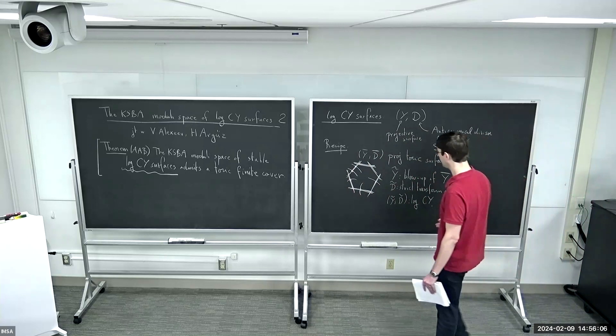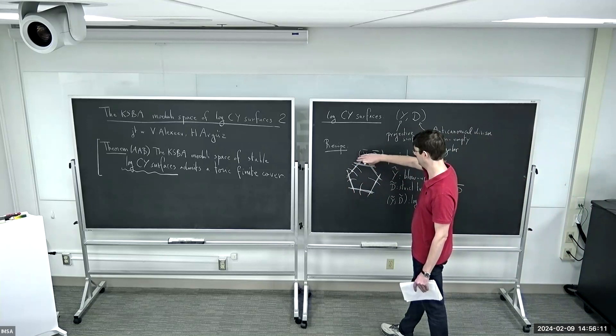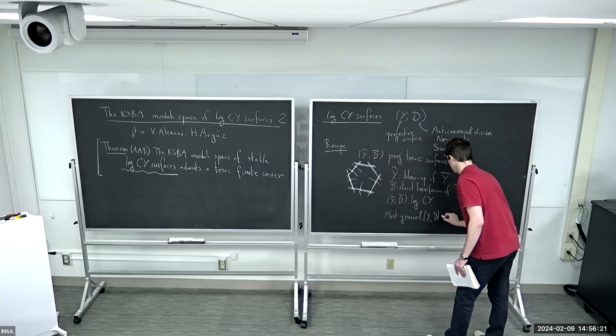To get all of them: if you have such (Y-bar, D-tilde), you can then contract some divisors of D-tilde and look at the image surface — you get the most general log Calabi-Yau. The most general (Y, D) is obtained from such (Y-bar, D-tilde) by contracting some components of D-tilde.